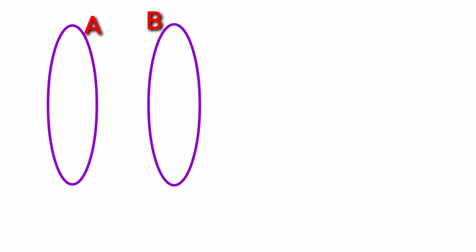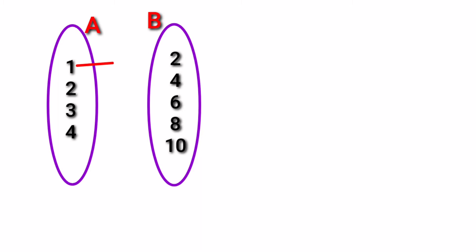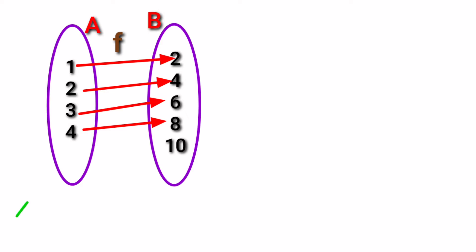Now let us see the types of functions. Two sets A and B are taken. The elements 1, 2, 3, 4 are in set A and the elements 2, 4, 6, 8, 10 are in set B. Let us draw an arrow diagram for the function f(x): 1 maps to 2, 2 maps to 4, 3 maps to 6, 4 maps to 8.